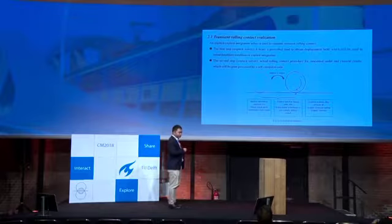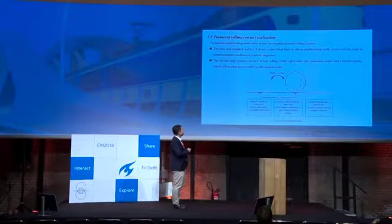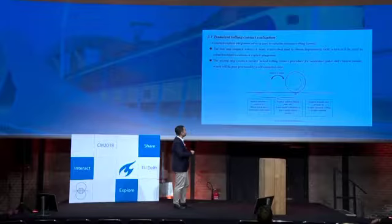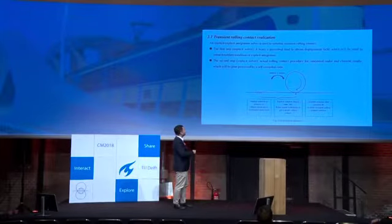The solution procedure includes two steps. In the first step, a prescribed load is applied to obtain the initial displacement field, which is used as an initial boundary condition for the next step. In the next step, the actual dynamic rolling contact procedure is solved by an explicit solver. We obtain the results we are concerned with — such as dynamic force, pressure, and traction or plastic deformations — via a self-developed post-processing code.